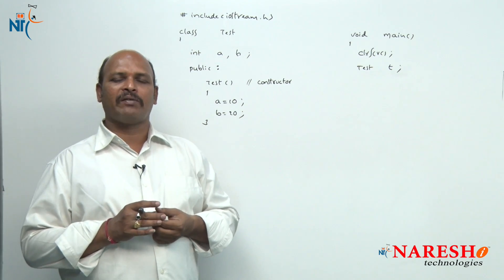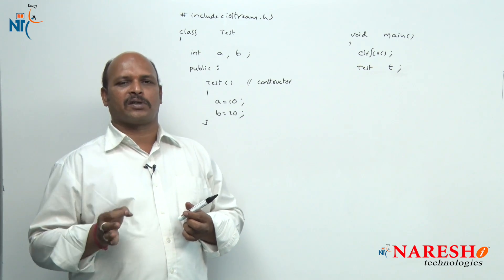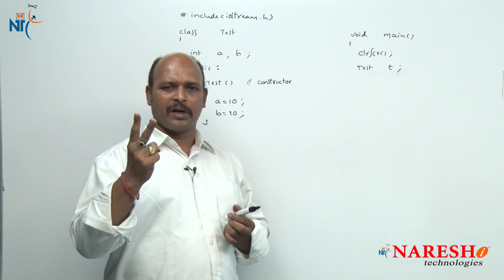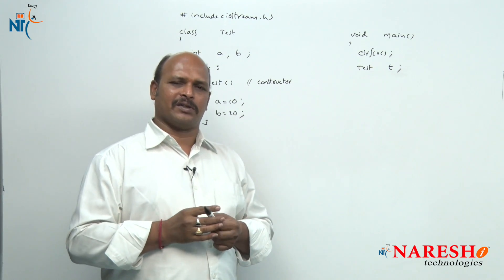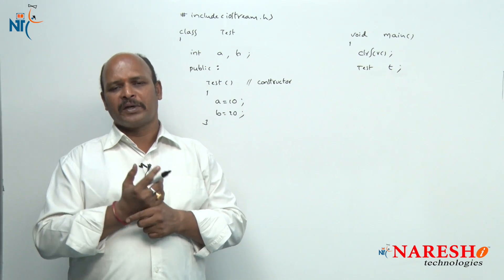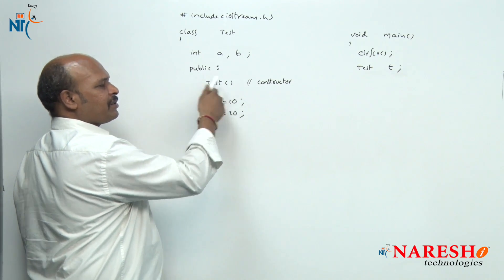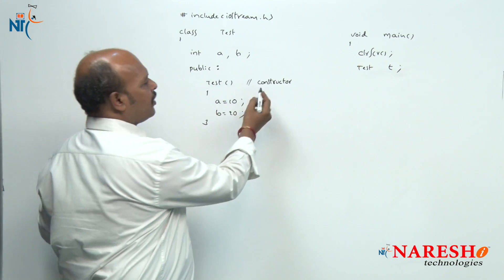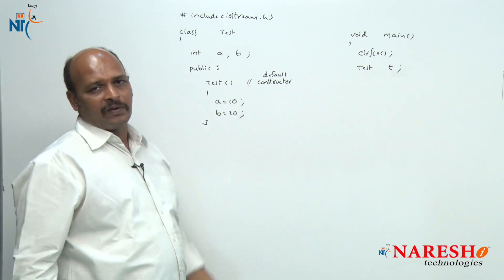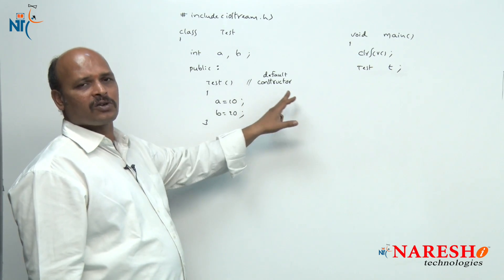In C++ we have three types of constructors: first, default constructor; second, parameterized constructor; third, copy constructor. A default constructor is a constructor without any arguments, also called a zero-parameterized constructor. For example, `test()` with empty brackets — no arguments — is a default constructor.